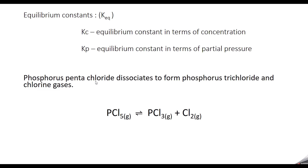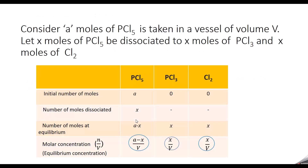We have taken phosphorus pentachloride. Phosphorus pentachloride dissociates to form phosphorus trichloride and chlorine gas. All reactants and the products are in the gaseous state, so this is an example of a homogeneous equilibrium.